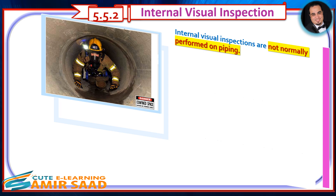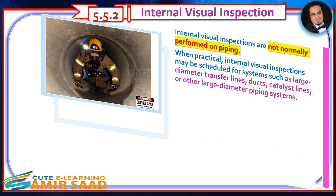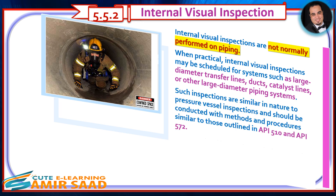Internal visual inspections are not normally performed on piping. When practical, internal visual inspections may be scheduled for systems such as large-diameter transfer lines, ducts, catalyst lines, or other large-diameter piping systems. Such inspections are similar in nature to pressure vessel inspections and should be conducted with methods and procedures similar to those outlined in API 510 and API 572.